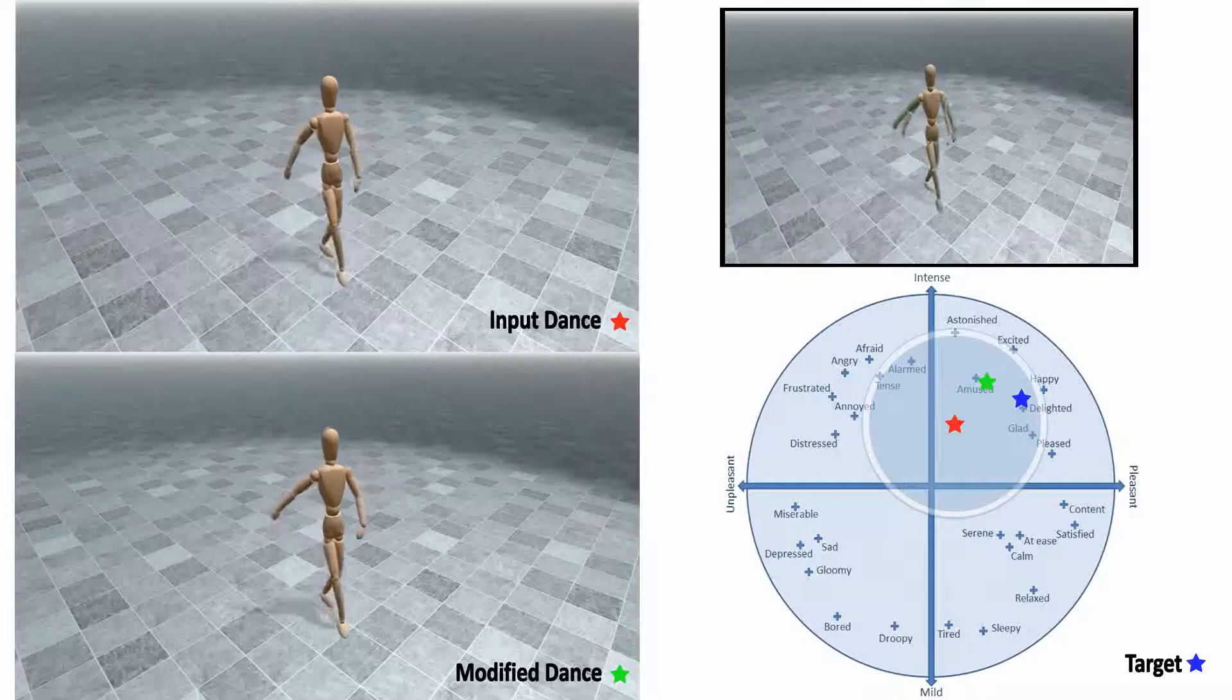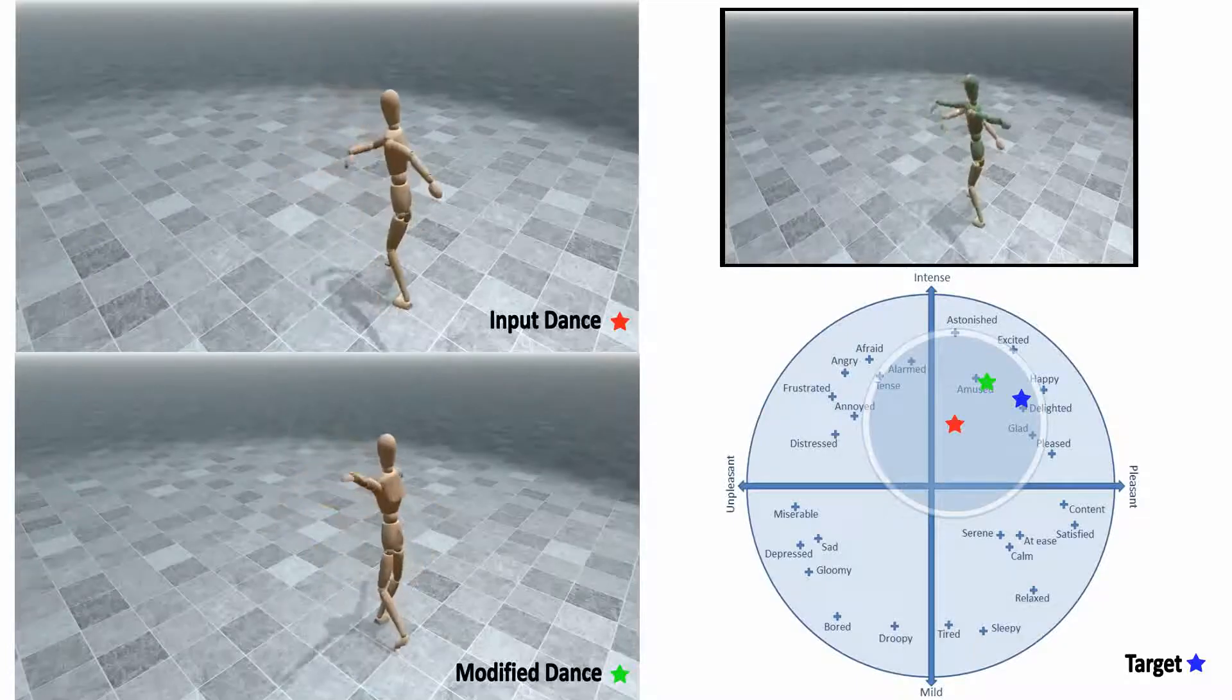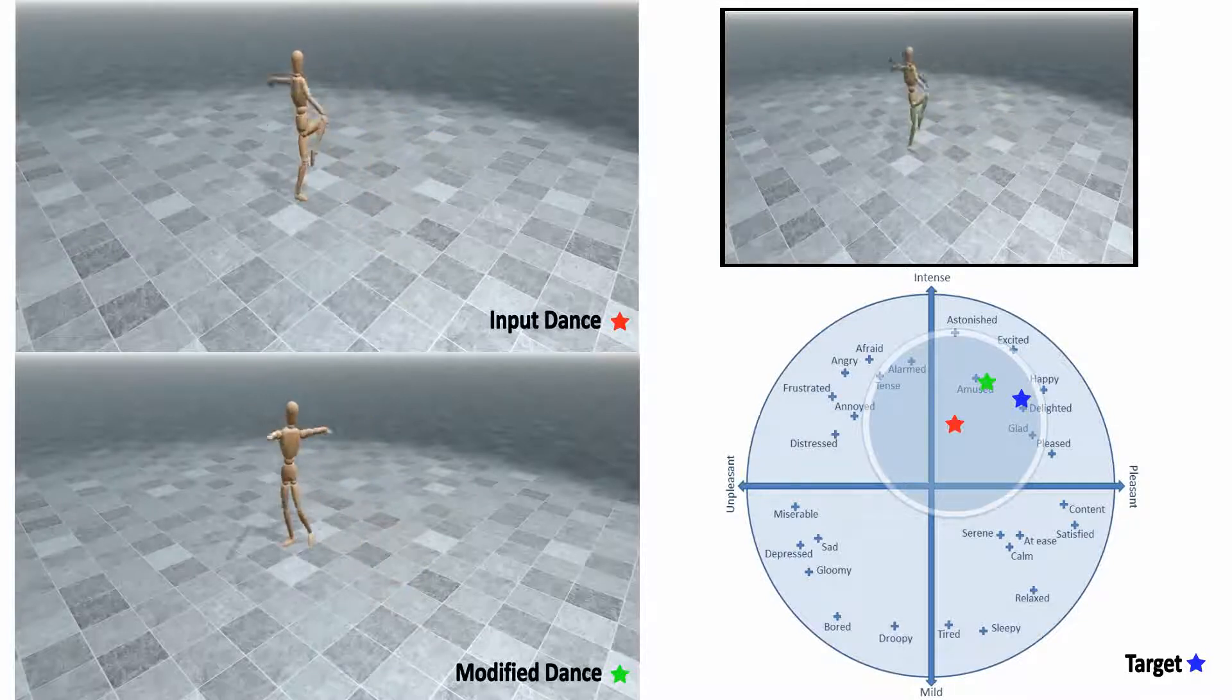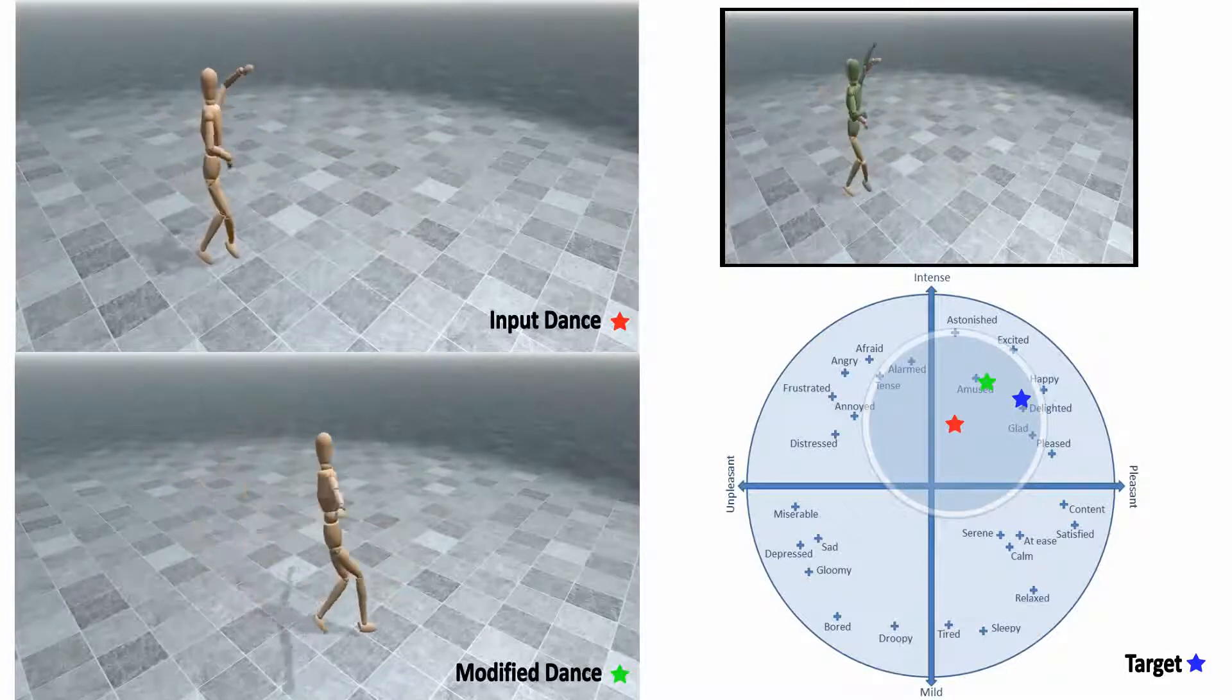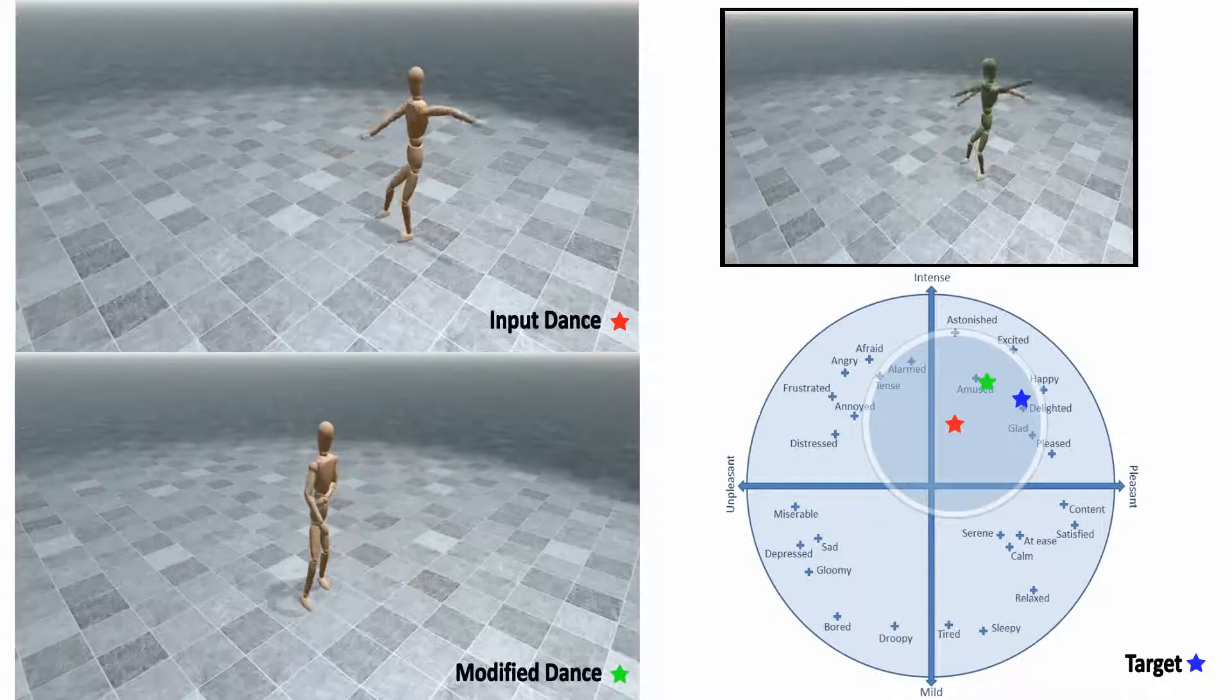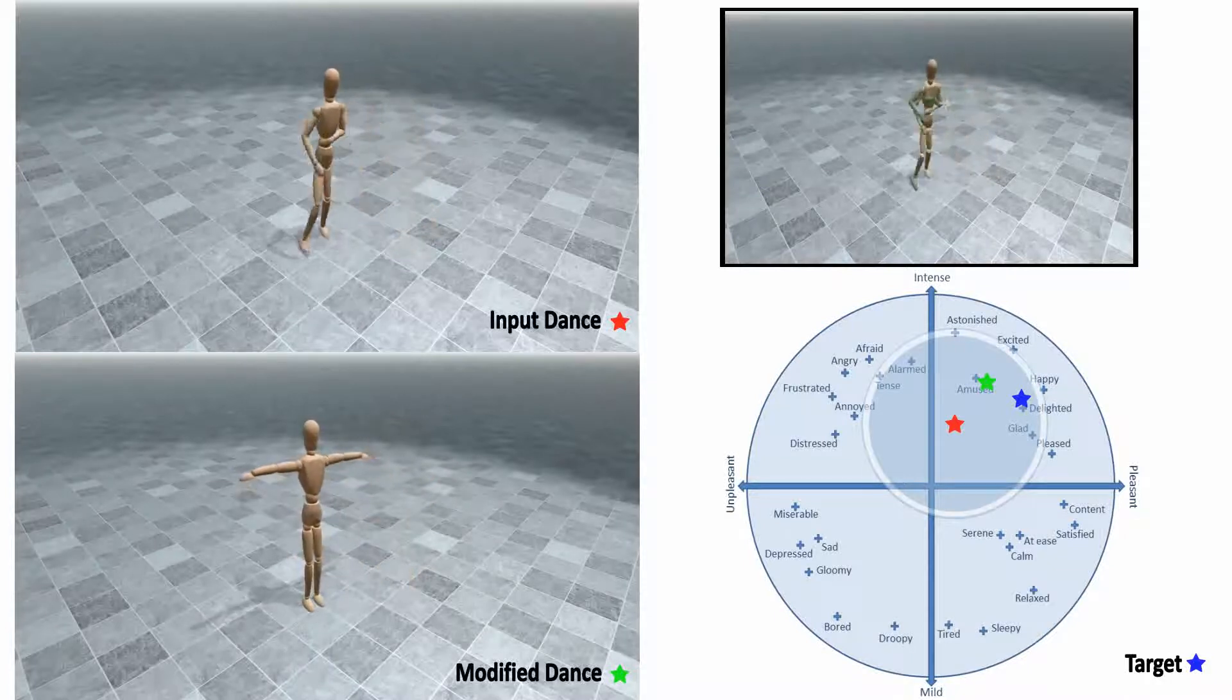In this section, we present the results of our methodology. Given an input motion sequence that has been mapped onto the RCM diagram, the user can implicitly modify the motion by interactively shifting the position of its emotion over the RCM plane. The animations on the left show the raw input and modified motions.